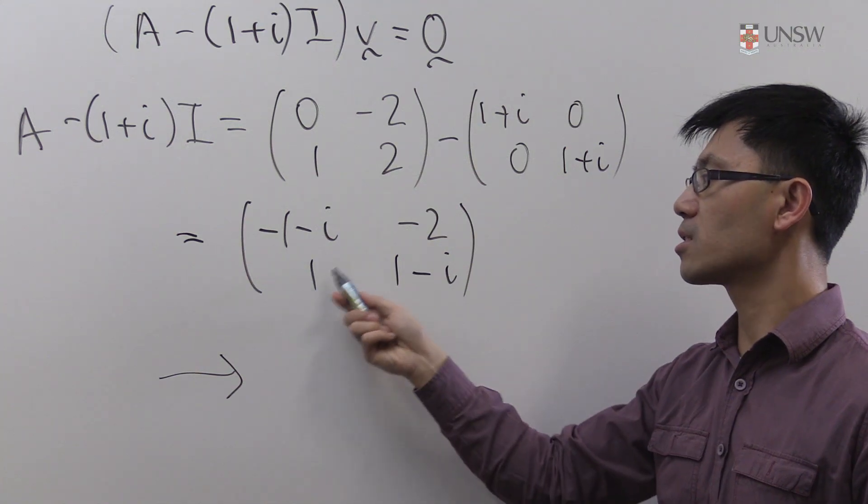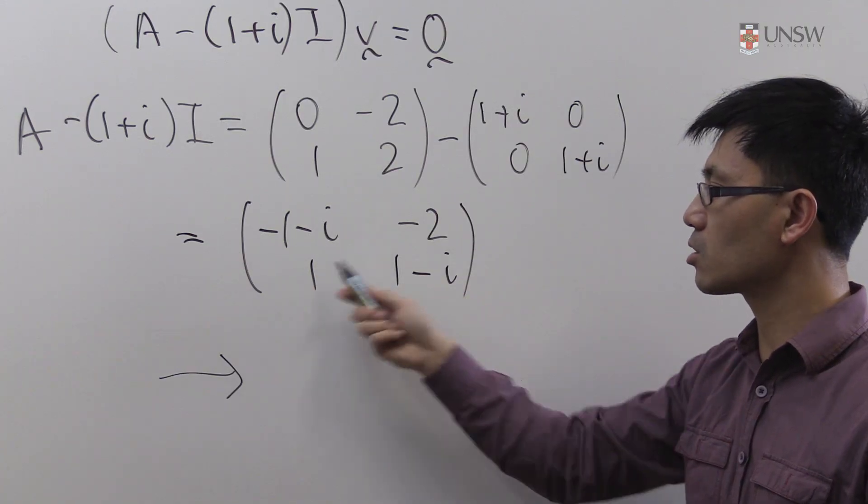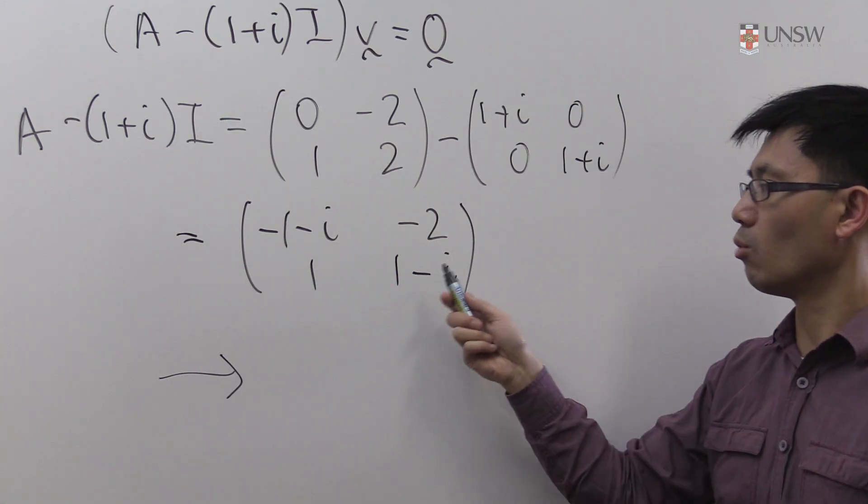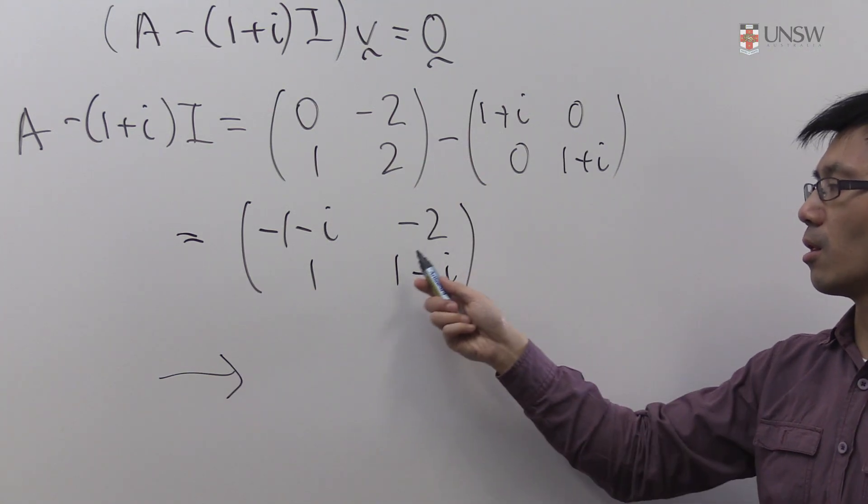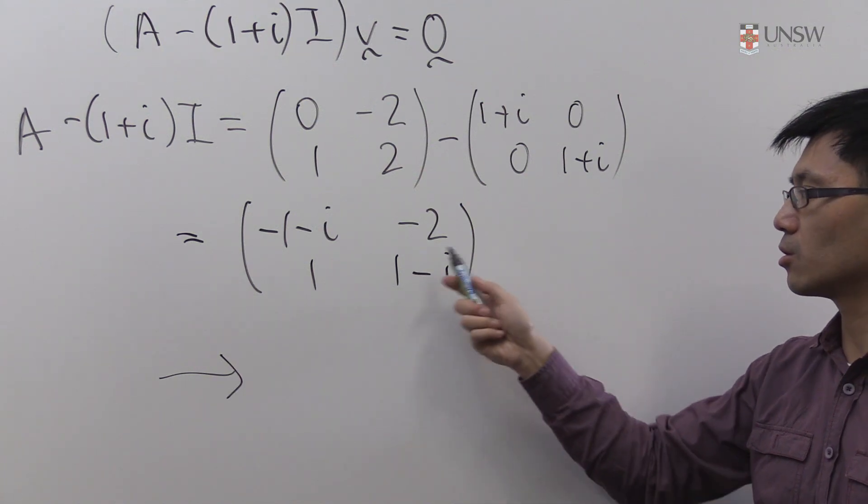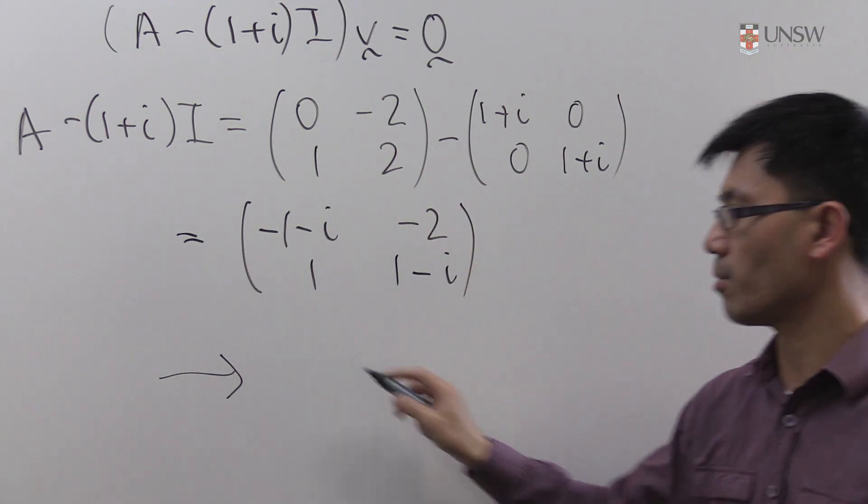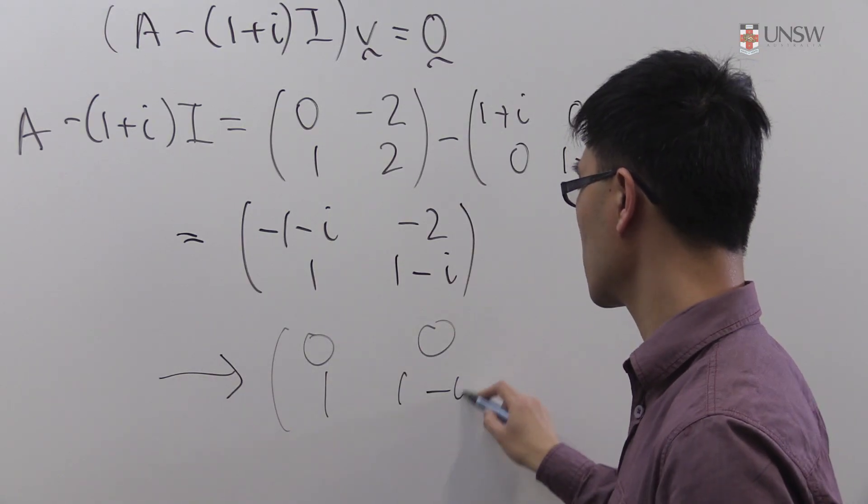We find if we multiply this first entry here by 1 plus i, we get the negative of this. So if we add 1 plus i times this row to this one, what do we get? 1 plus i times this is just equal to 2, the modulus squared of this term. So that cancels with that. So you get 0, 0 up there. And the bottom row is 1, 1 minus i.